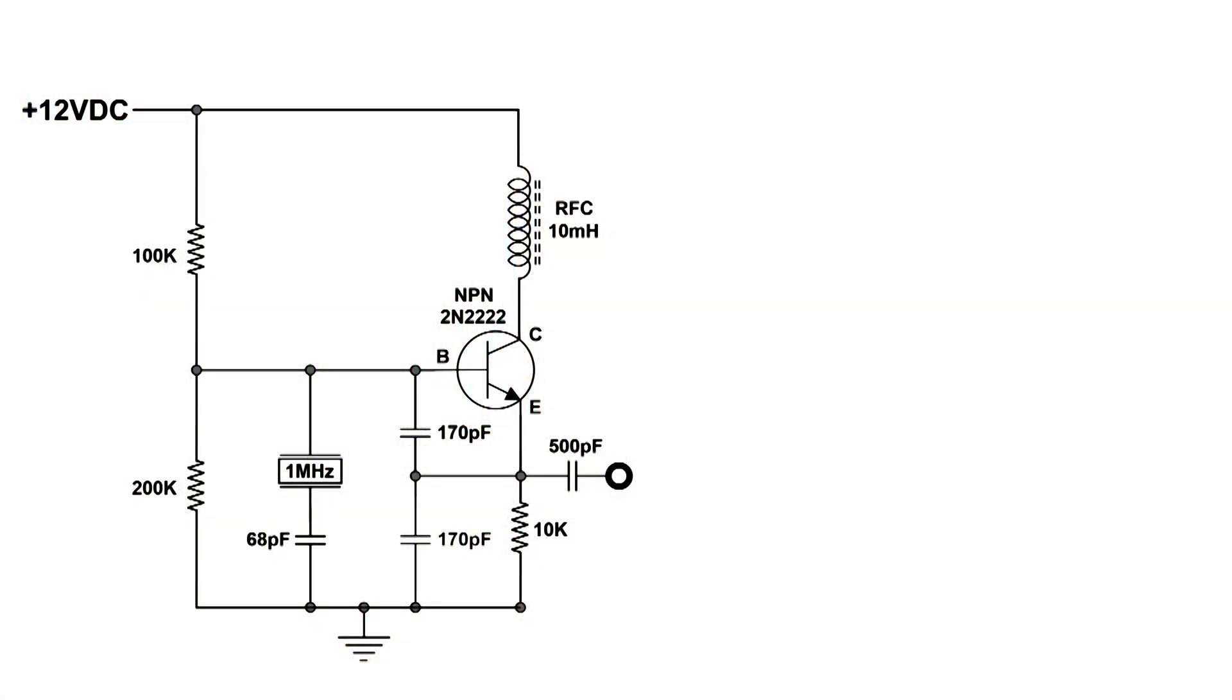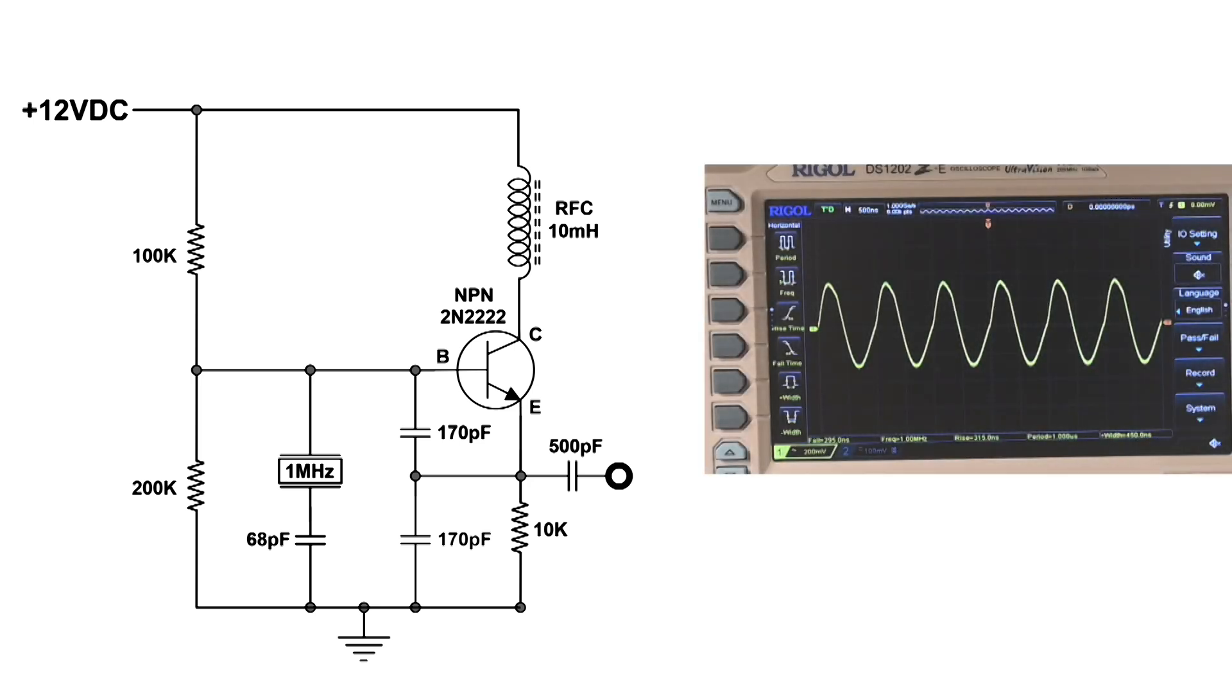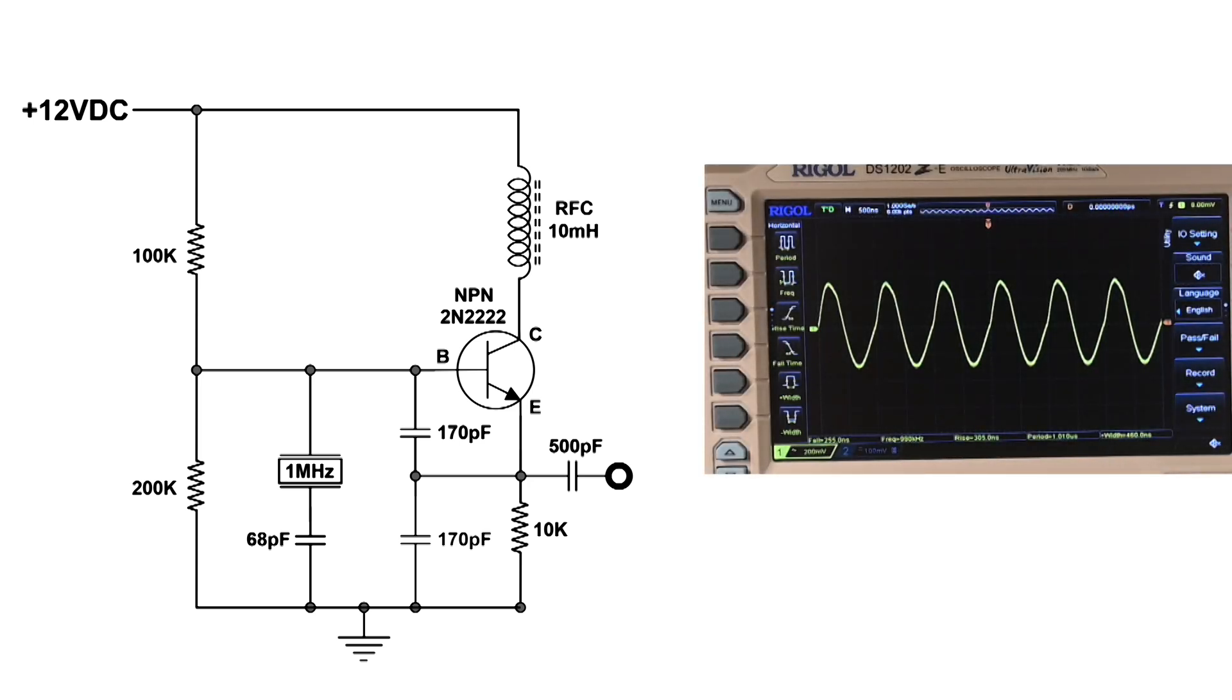Here's the wiring diagram. I'm going to put the scope up on the right side here. I now have the scope with the ground lead on ground and the scope is now on the output of this circuit.